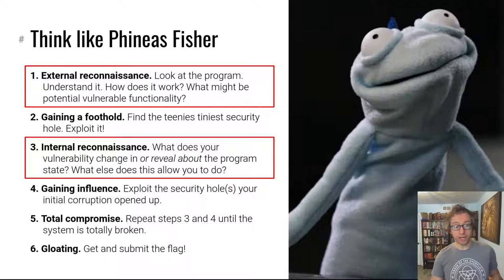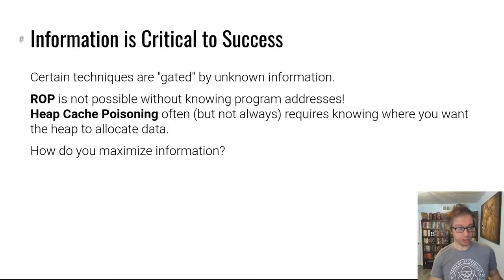Let's talk about information. Information is critical. A lot of the techniques that you know aren't viable without knowing the necessary information. You can't ROP without knowing where program addresses are. Now in the ROP module we've explored techniques to figure out where the program addresses are, but you still need to first figure it out before you can actually execute a ROP chain.